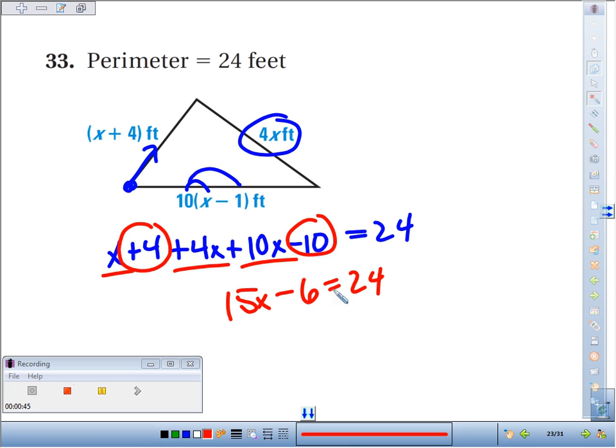Now we just add 6 to both sides to get 15x equals 30. And your last step, divide by 15 to get x equals 2.